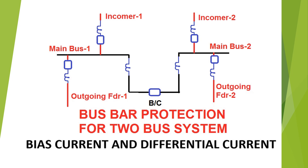Hello friends, welcome back to my channel. Today I will discuss bus bar protection for a two main bus system where the two main buses are connected via a bus coupler, and how the bias current and differential current are calculated for a bus bar protection relay.